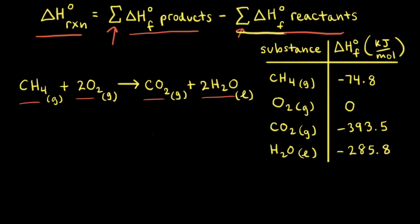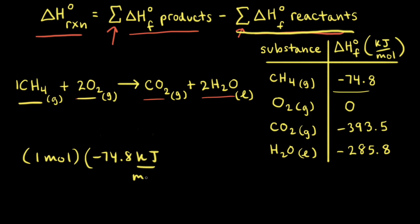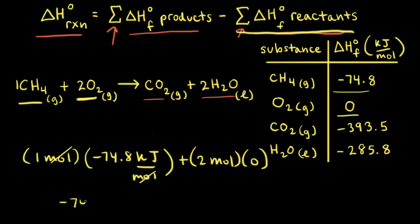Next we need to sum the standard enthalpies of formation of our reactants. The two reactants are methane and oxygen. We have one mole of methane with a standard molar enthalpy of formation of negative 74.8 kilojoules per mole, so we multiply one mole by negative 74.8 kilojoules per mole. Our other reactant is diatomic oxygen gas, which has a standard enthalpy of formation of zero. So two moles of oxygen multiplied by zero gives zero. Moles cancel, giving us negative 74.8 kilojoules as the sum of the standard enthalpies of formation of our reactants.